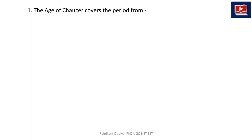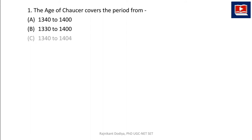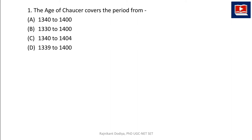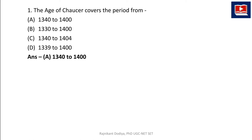The first question: the Age of Chaucer covers the period from — we have four options: 1340 to 1400, 1330 to 1400, 1340 to 1404, or 1339 to 1400. We have to find the correct answer. The correct answer is option A: 1340 to 1400.